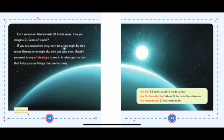How big? Sixty-three Earths could fit inside Uranus. How far from the Sun? About nineteen Earth-to-sun distances. How many moons? Twenty-seven discovered so far.